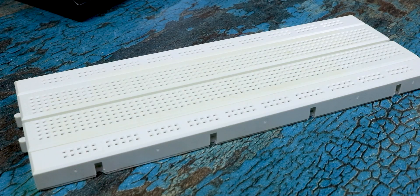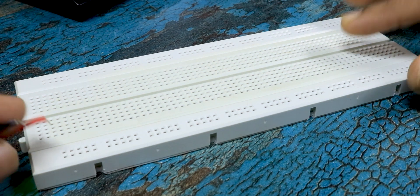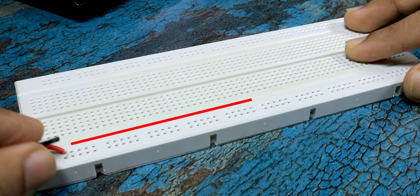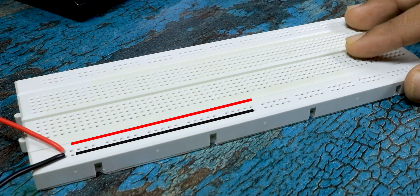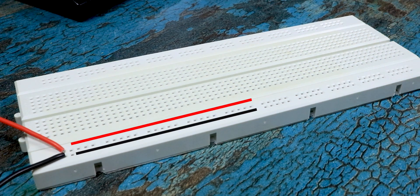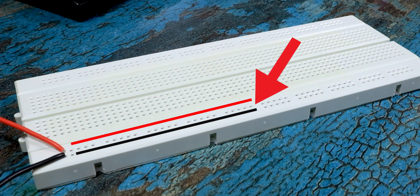They are connected vertically and not horizontally. So let's say if I connect my five volt over here and ground over here, then there will be five volt and ground in these rows. If I want to get five volt and ground below this line as well, then I need to add a jumper cable over here.